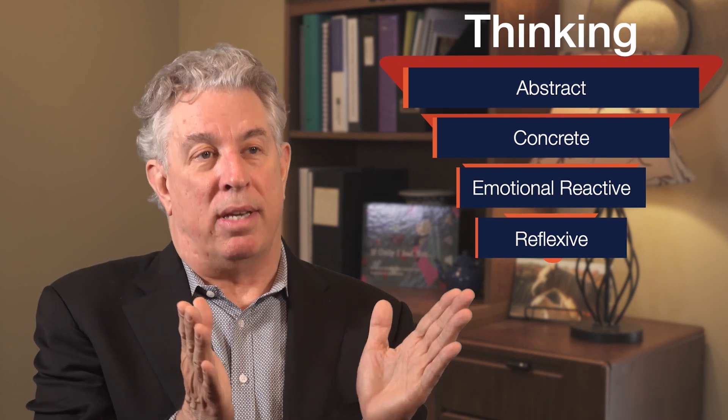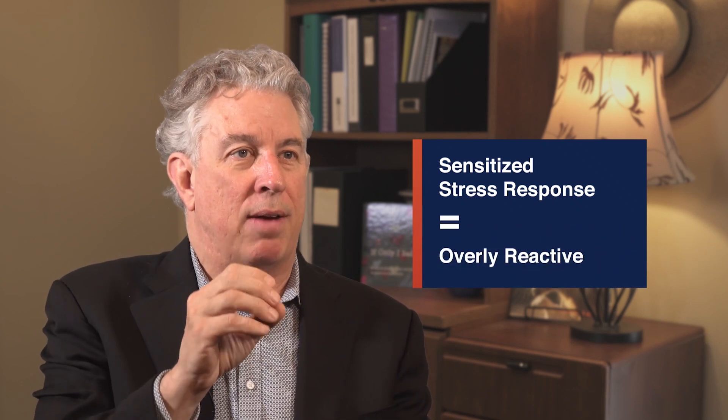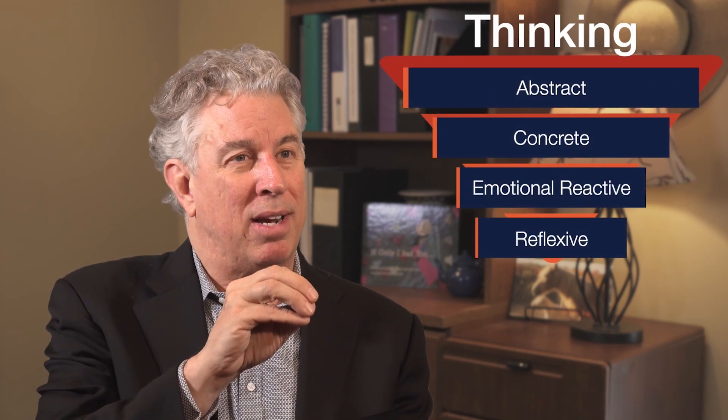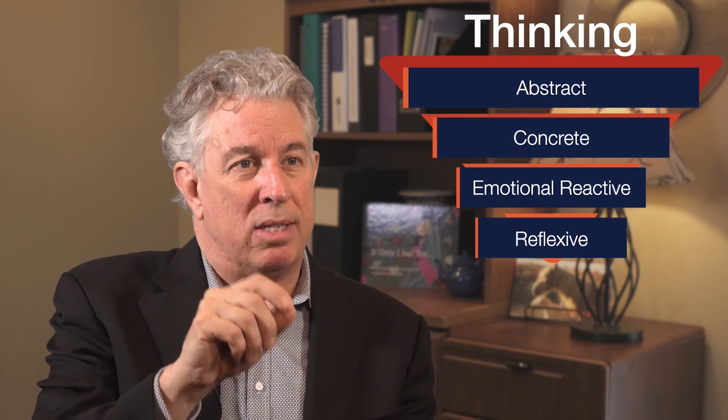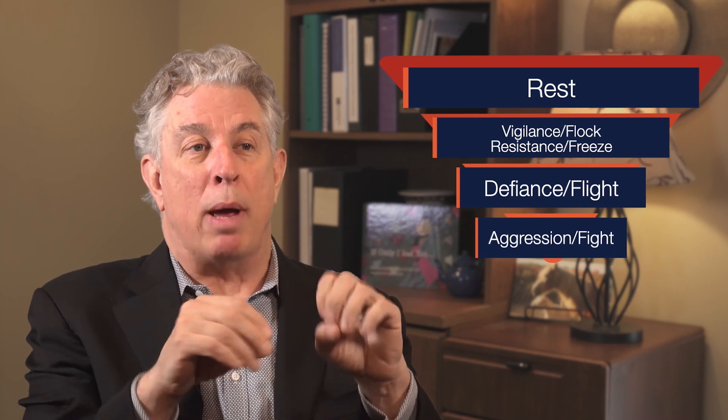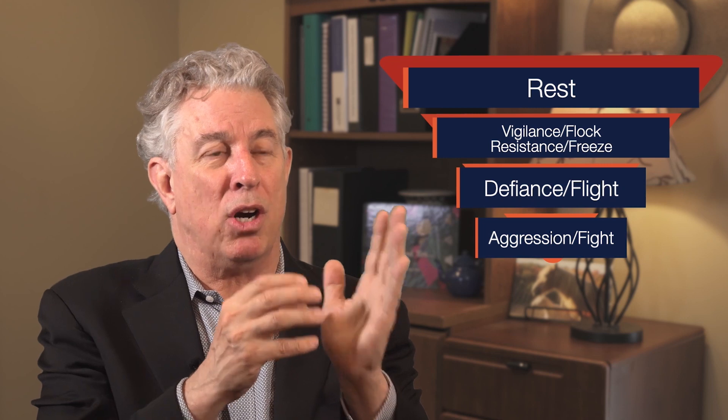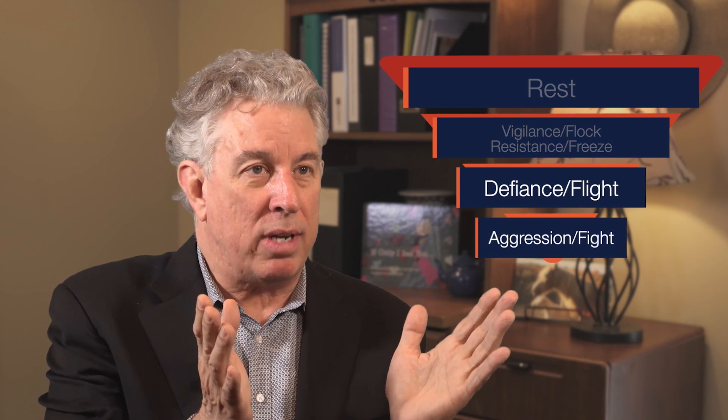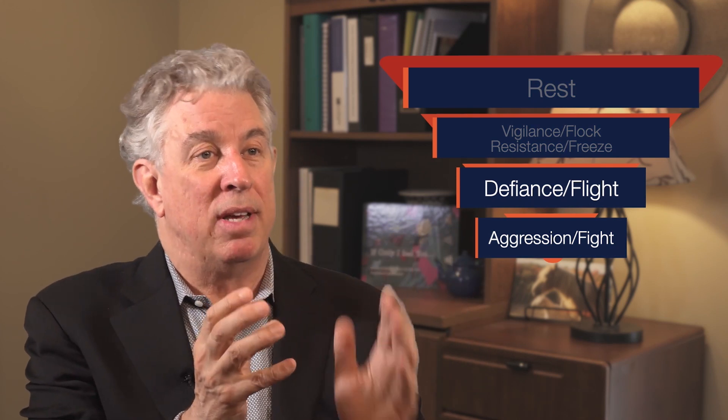The more threatened you are, the more you use these primitive parts of your brain. Most of us are at baseline pretty well regulated — a moderate challenge produces a moderate internal response. But the kids we work with frequently have what we call a sensitized stress response, meaning they're overly reactive. A minor challenge produces an overreaction. In one moment they can use their cortex and think about consequences, but two minutes later when somebody bumps into them in the hallway, that physical contact — processed by the lower brain first — is reminiscent of when they were previously hurt.